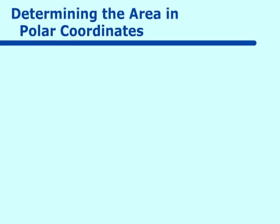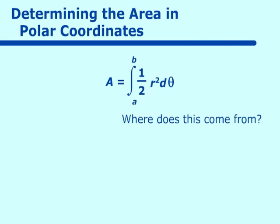Determining the area in polar coordinates. Well, the formula is area equals the integral from A to B of one half r squared dθ. Where does this come from?